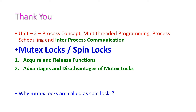To summarize, we have seen the definition of mutex locks and the two functions available in mutex locks — the acquire function and the release function — as well as the advantages and disadvantages of mutex locks. Students, write your answer in the comment box explaining why mutex locks are called spin locks. In the next class, we will see another important topic from the second unit. Thank you.